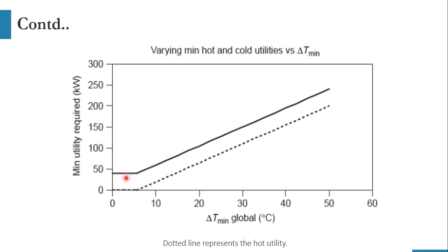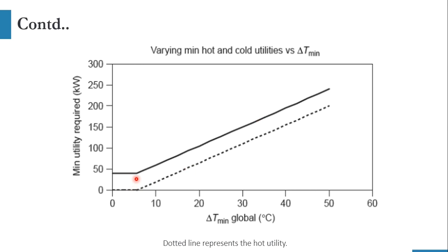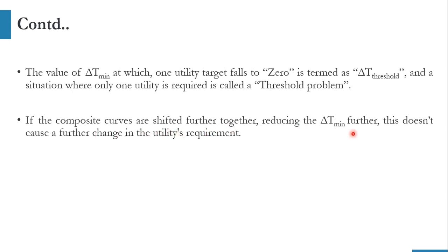If you take delta T minimum values from zero to, say, seven, the delta T minimum has no effect on the utility requirement — the utility requirement will remain the same. But once you move past that threshold point, the requirements will vary with the manipulation of delta T minimum. The value of delta T minimum at which one utility target falls to zero is termed as delta T threshold. This delta T threshold corresponds to the temperature at which one utility requirement becomes zero and the other utility becomes constant. If the composite curves are shifted together, reducing delta T minimum further does not cause a further change in the utility requirement — the utility won't change after that.